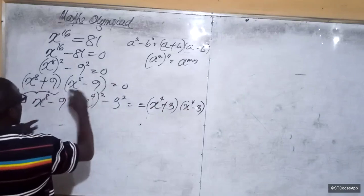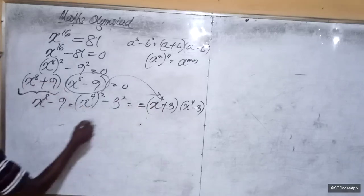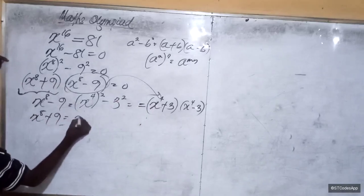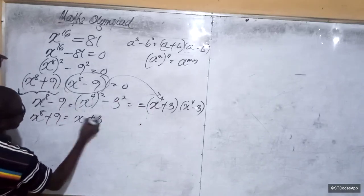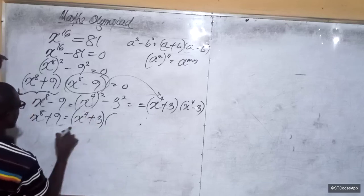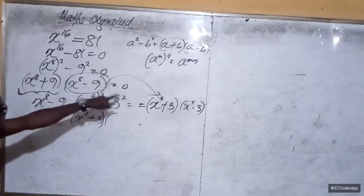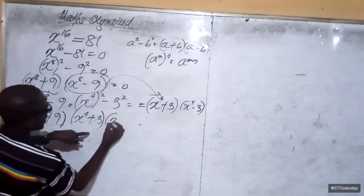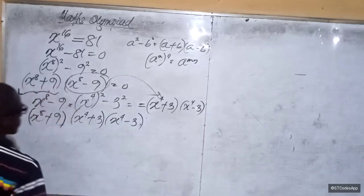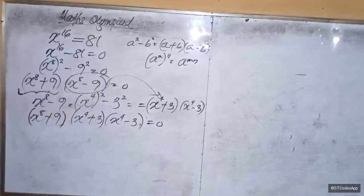This is going to be replaced by both of those. So we have x raised to the power 8 plus 9, x raised to the power 4 plus 3, and x raised to the power 4 minus 3. This is the product of this guy and this guy and this guy is equal to zero.